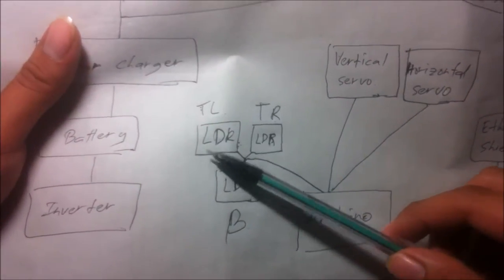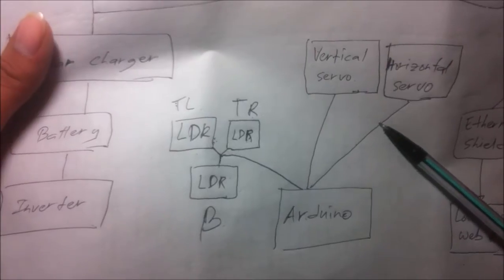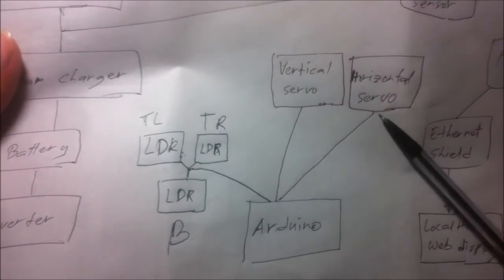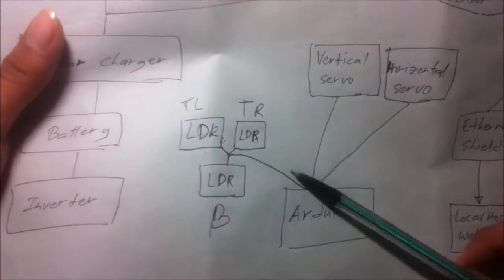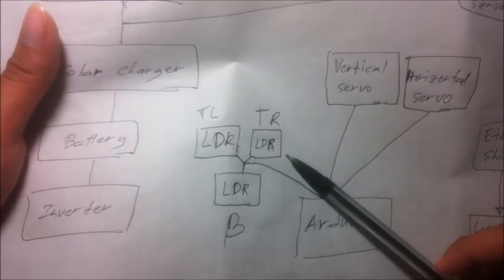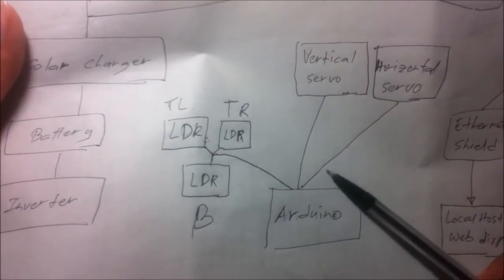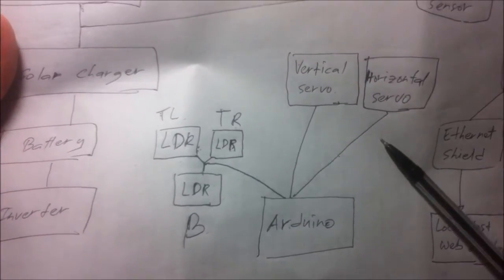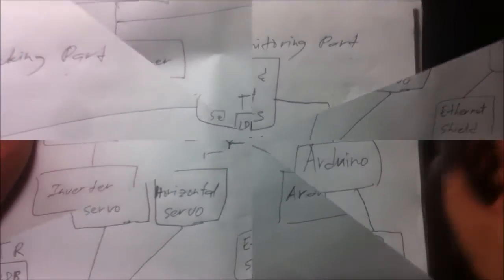Then the top-left LDR reads it and sends a signal to the horizontal servo, telling the servo to go right. And if the top-left LDR has a lesser value than the right LDR, the Arduino reads it and tells the horizontal servo to go left. This is how the tracking part works.